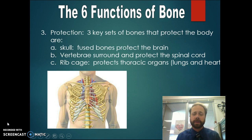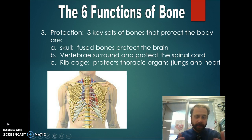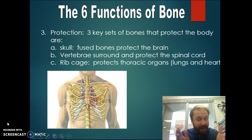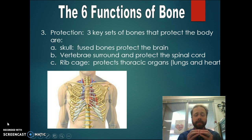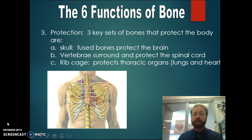Protection is another function of the bones. Looking at the skull, fused bones will protect the brain. When you're a newborn, the bones haven't hardened yet and they haven't fused together yet, but over time they will. Then you have the vertebrae, which surrounds and protects the spinal cord — damage to it can lead to different types of paralysis. Then the rib cage, as seen in the picture, protects the thoracic organs: the lungs and the heart.